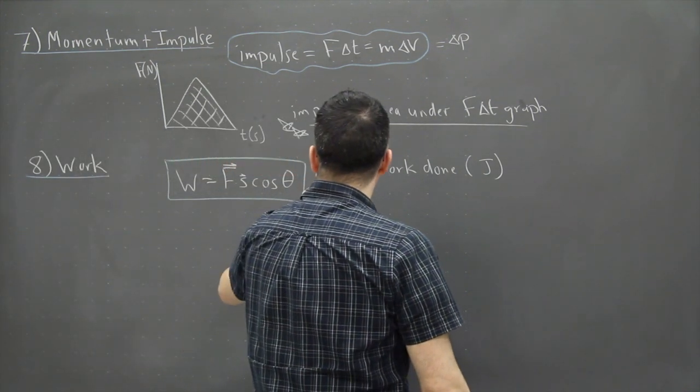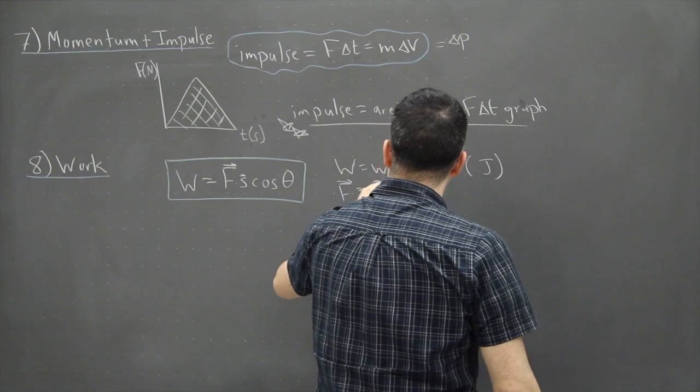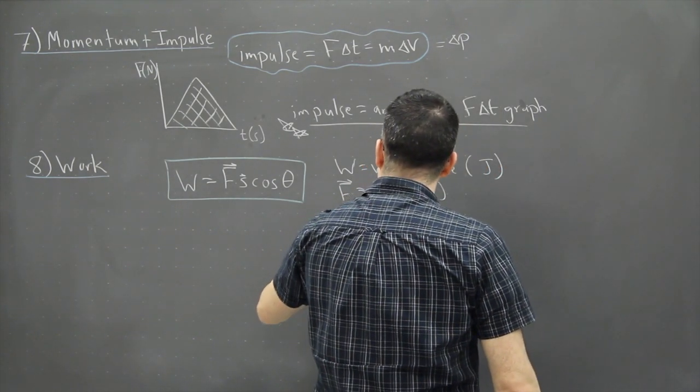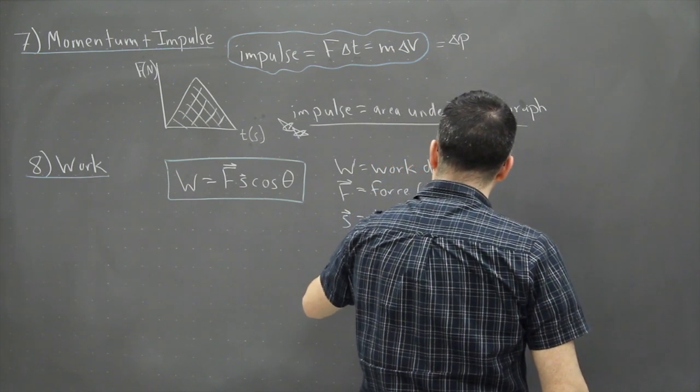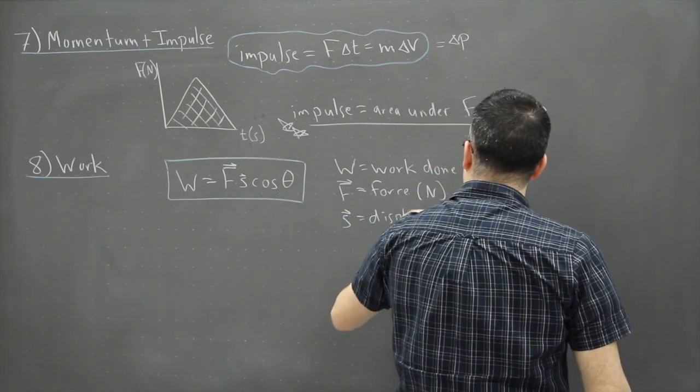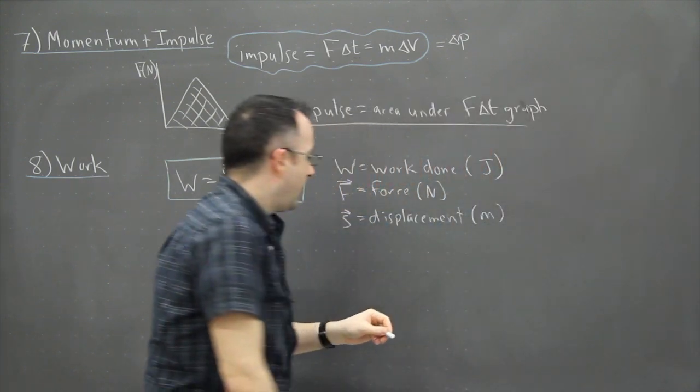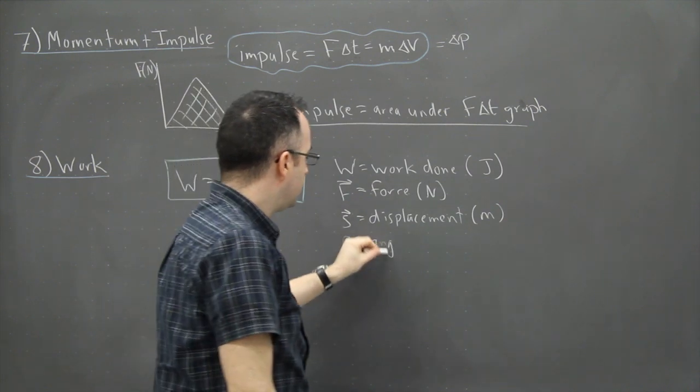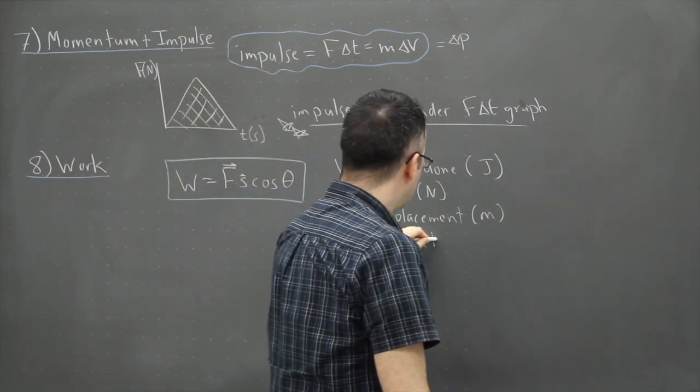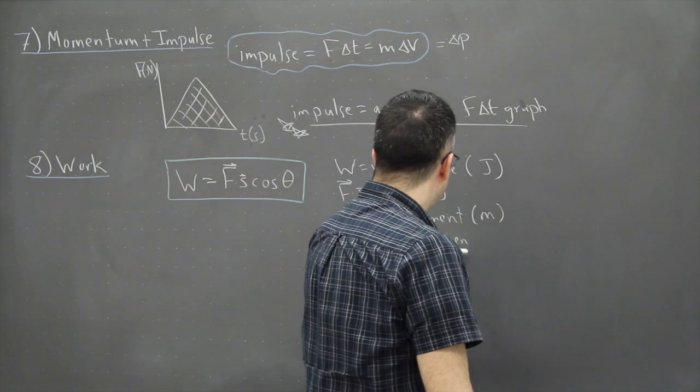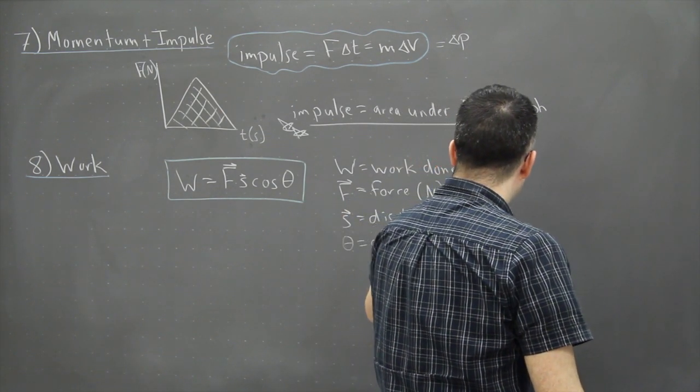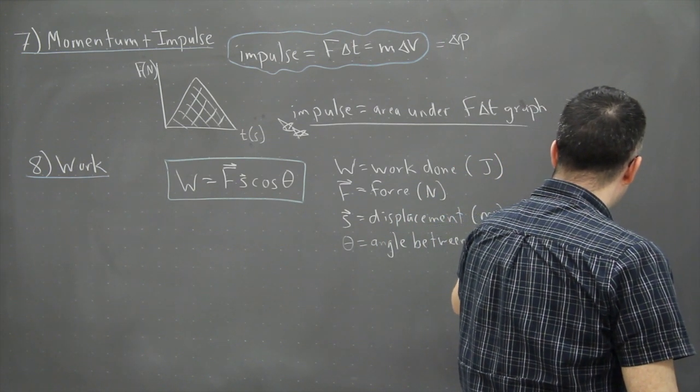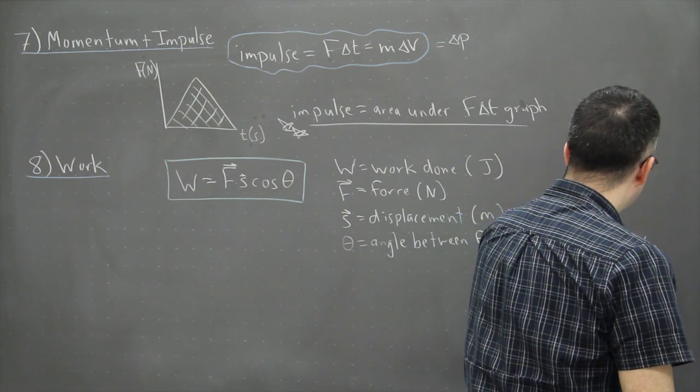However, the force, that's F, and that's measured in newtons. We've got S, we've seen that before, that's our good old friend displacement, measured in meters. And the angle theta, that's going to be the angle between the force and the displacement. The angle is written in units of degrees.